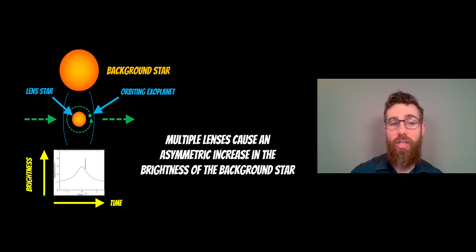Now, if you've got a lens star and an exoplanet orbiting that lens star, you get more of an asymmetric increase in brightness of the background star. So this time around, the background star is magnified and you get that overall increase in brightness. But then as the exoplanet goes in front as well, you get an additional spike in that, which relates to the exoplanet itself. This could be true for an exoplanet or it could be a binary star system. Basically a multiple lens is going to cause an asymmetric increase like this.